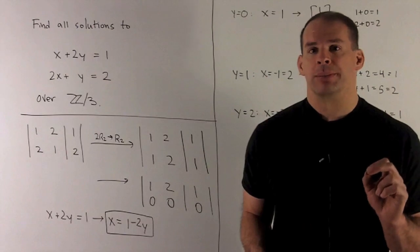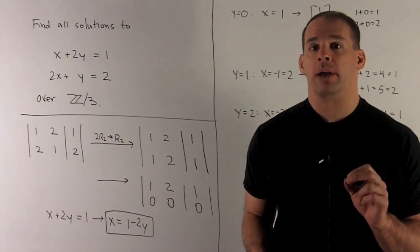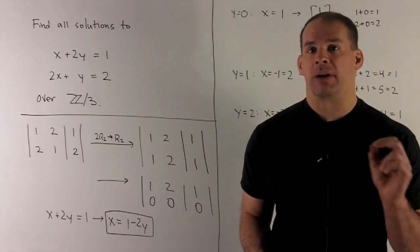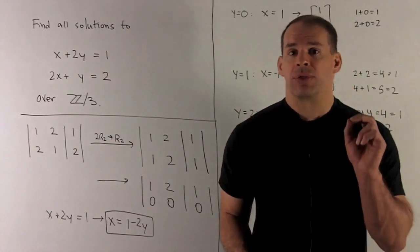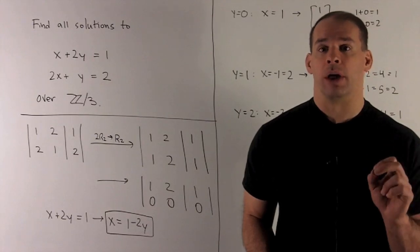Going back to our variables, to unwrap this, that's just going to say x plus 2y is equal to 1, or x equals 1 minus 2y. So y is going to be our free variable, but since I'm only looking at Z3, I only have three options for what I can put into y. It can be either 0, 1, or 2.